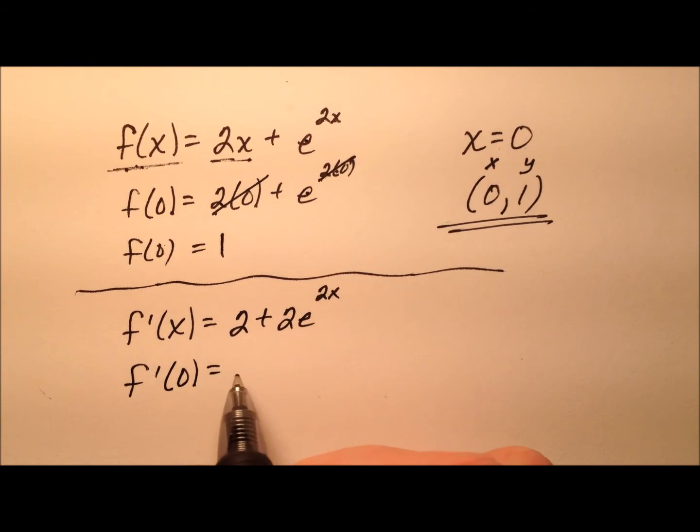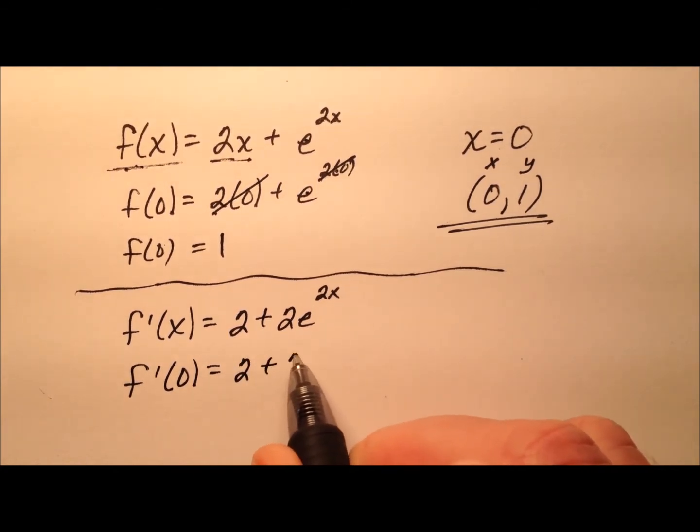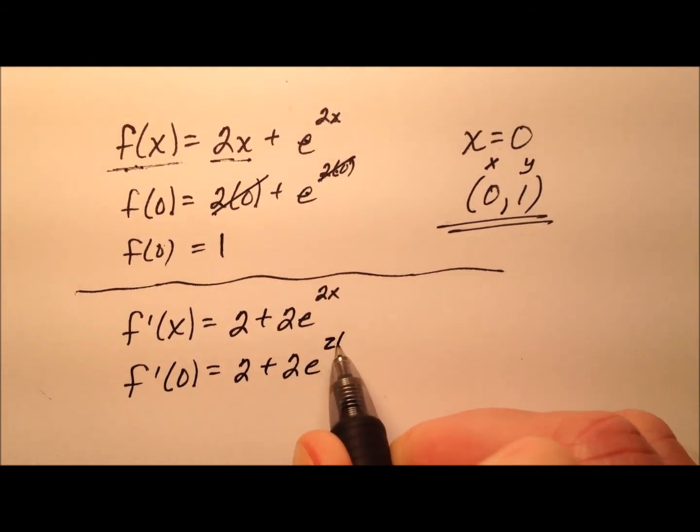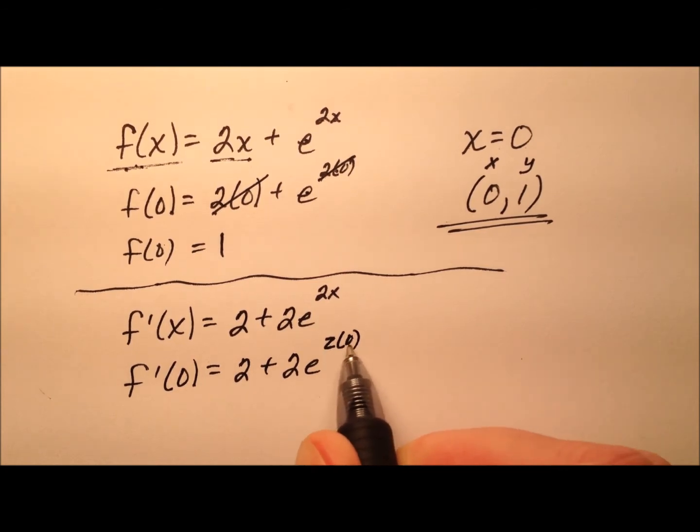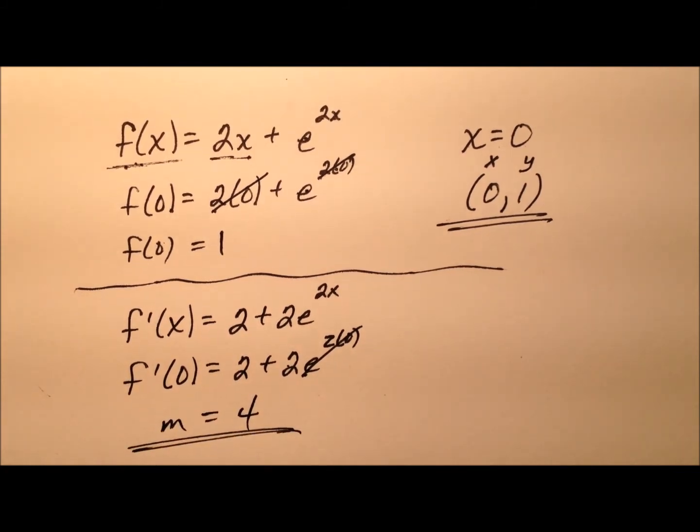When I plug 0 in, I'll have 2 plus 2 times e^0. e^0 is 1, so 2 times 1 is 2, and 2 plus 2 equals 4. That will be my slope.